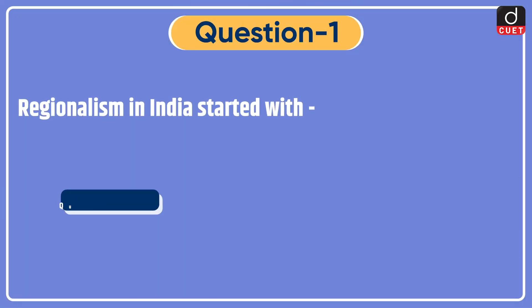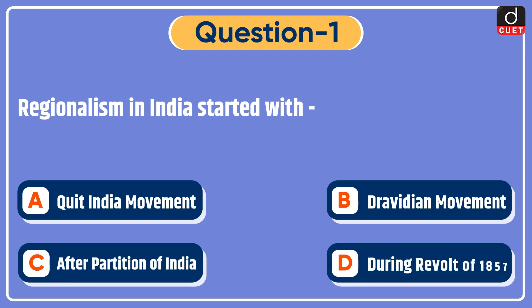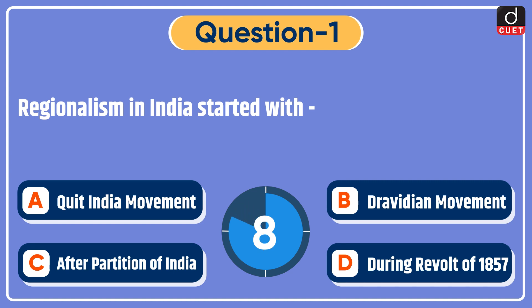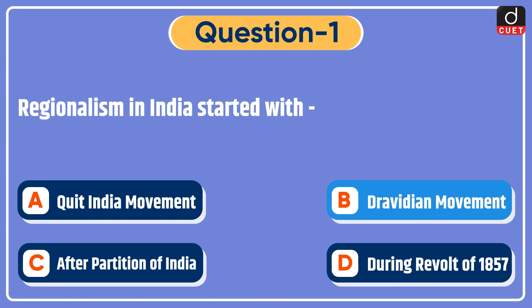Now let's begin today's session. First question: regionalism in India started with — Quit India Movement, Dravidian Movement, after partition of India, or during the revolt of 1857? The correct answer is option B, Dravidian Movement.